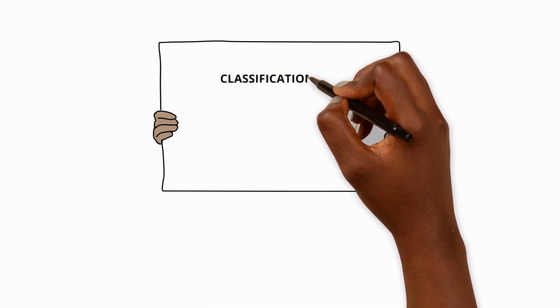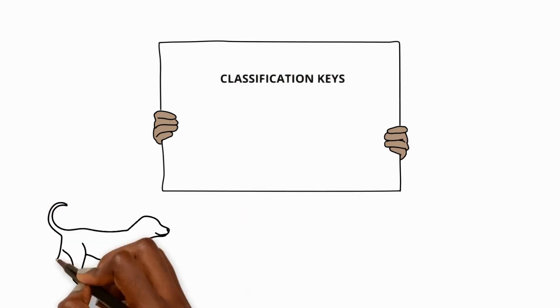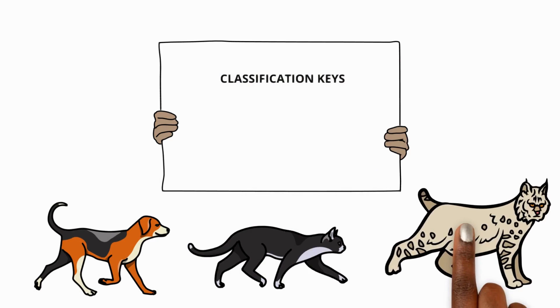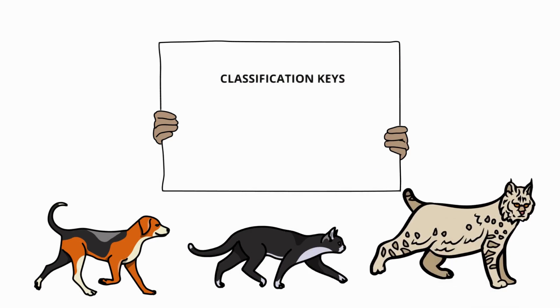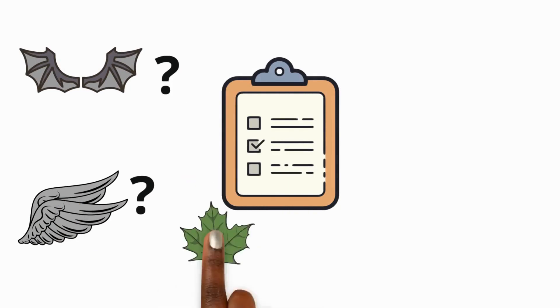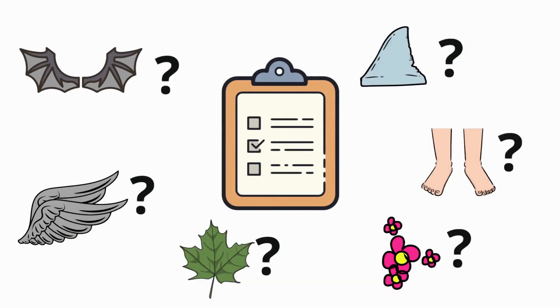Classification keys. Sometimes it's easy to know what an animal is just by looking at it but sometimes we come across animals that we can't easily identify or name. That's where classification keys come in handy. We use them to identify a plant or animal using yes or no questions about the features of living things.